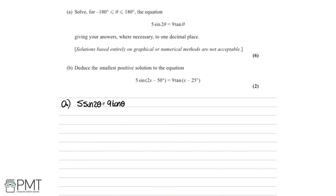The first thing that jumps out is we've got sin2θ, and in the formula booklet there's an identity for that. Using the identity sin2θ = 2sinθcosθ, we can rewrite the equation, replacing sin2θ with 2sinθcosθ.